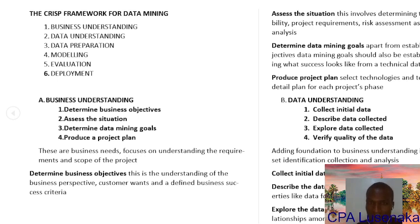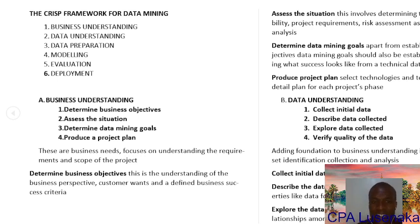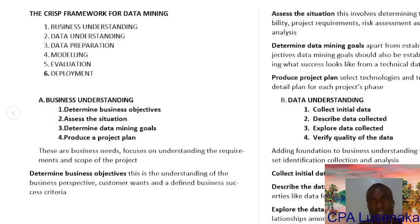Determining business objectives involves understanding the business perspective — what the business wants, what the customer wants — and understanding the business success criteria, which is a criteria explaining how to determine whether this business is successful or not.